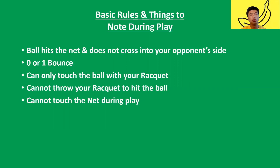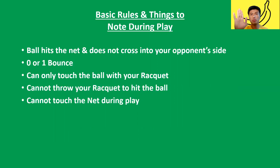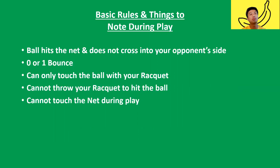You cannot touch the net during play — a lot of people don't know this one. If you're running straight to the net, you hit the ball, and you can't stop yourself and grab onto the net, you lose the point. Unless after you hit the ball it bounces twice — point's over — then you touch the net, that's fine. But at any point in time, you cannot touch it with your body nor your racket. You will immediately lose the point.